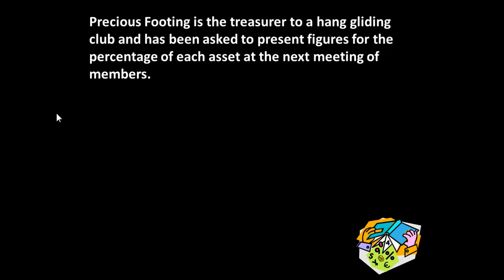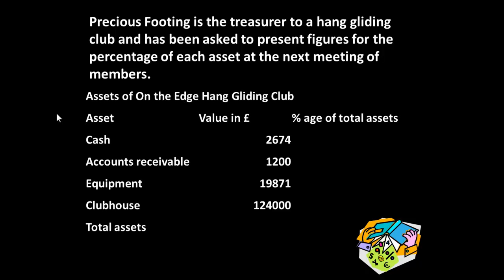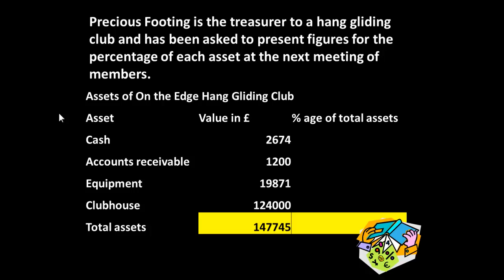Precious Footing is the treasurer of a hang gliding club and has been asked to present figures for the percentage of each asset at the next meeting of members. Here are the figures she is going to be working with: she has the value of each type of asset and needs to know what percentage of total assets these are. The first thing we've got to do is determine what the figure is for total assets, which comes to 147,745.